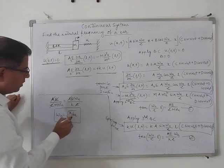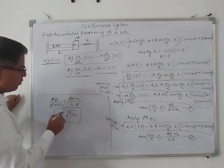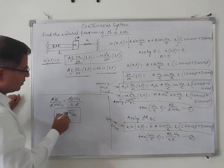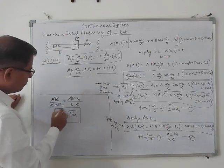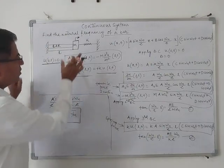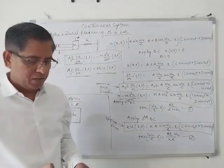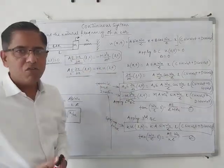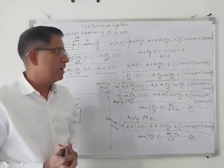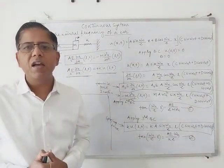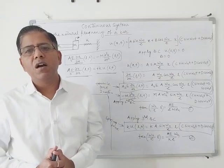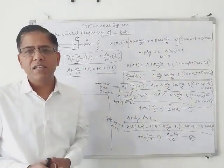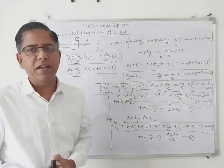So omega n squared is equal to k by m and omega n is equal to the square root of k by m. This is the frequency equation for this particular arrangement. I hope you have understood this variety of longitudinal vibration, and this will give you sufficient idea of how to approach this kind of problem whenever there is a force applied at the end.